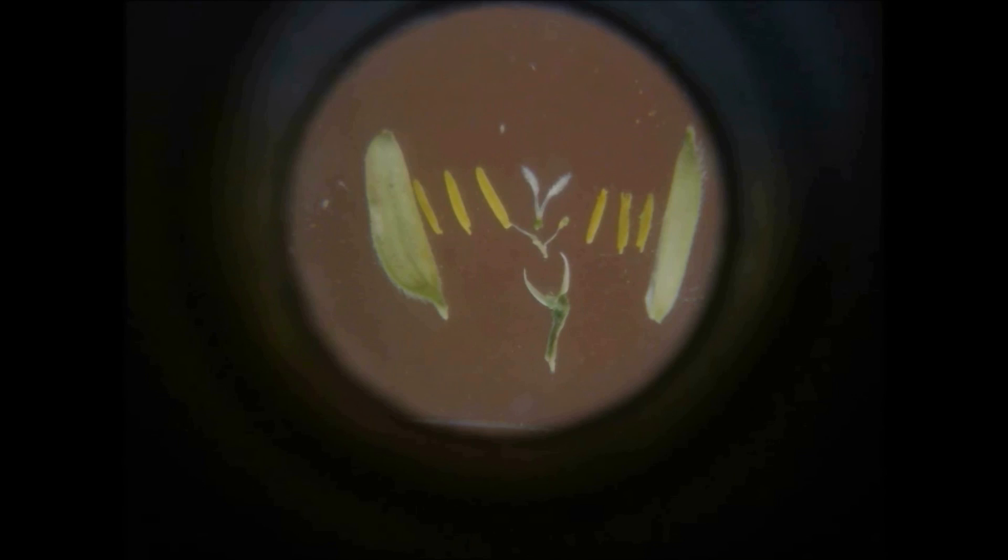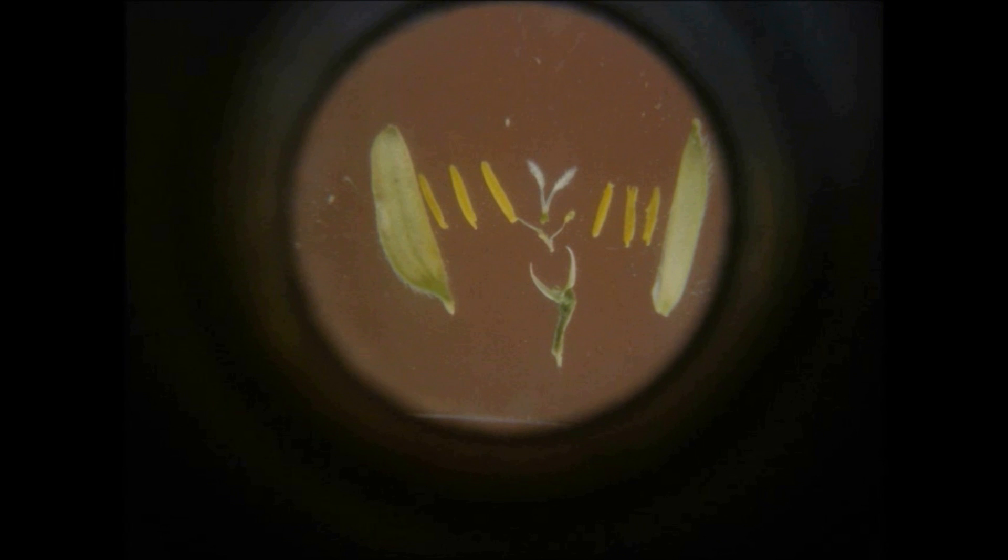The dissected rice flowers are arranged in an orderly manner and observed under the microscope. Normally, the rice flower contains six anthers, one carpel, lodicules, lemma, palea, and glume.